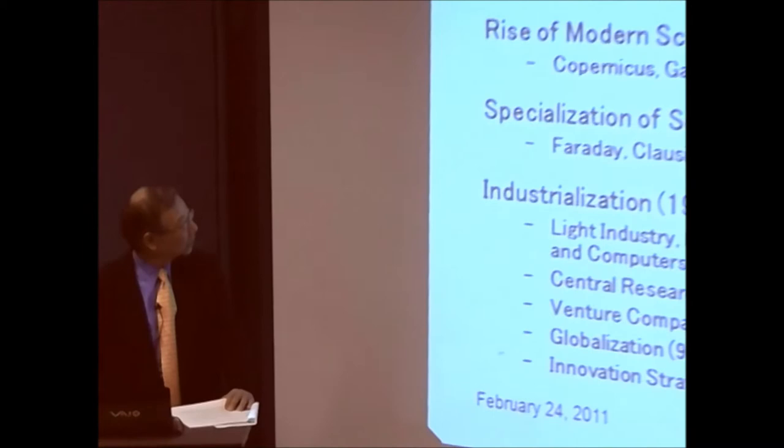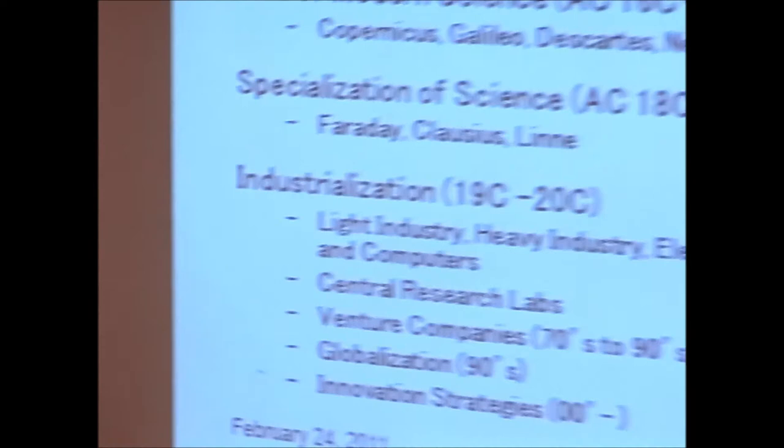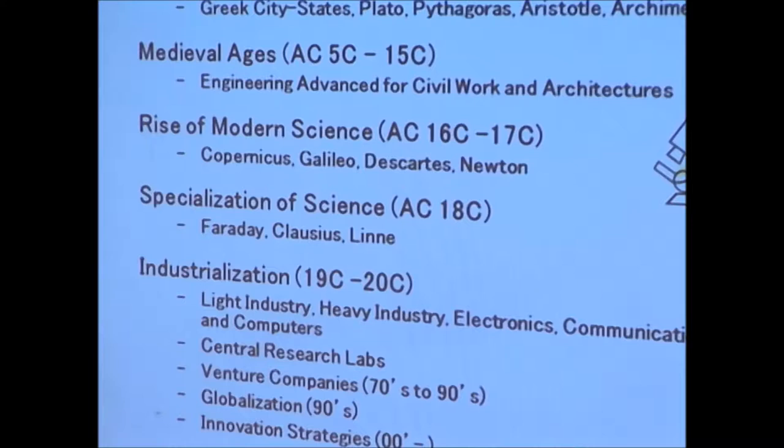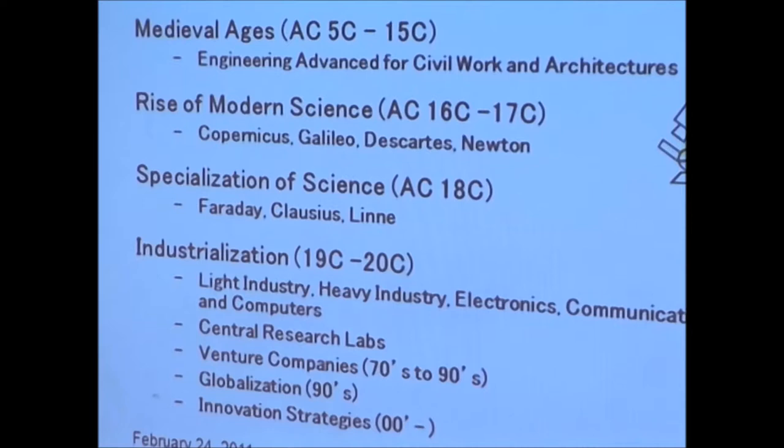Then the center moved to Rome, where advances in engineering were achieved, such as civil work, waterworks, and architecture. It was in the 16th and 17th century that science and technology finally converged. The representative examples of this age are Copernicus and Galileo's physics and astronomy, and Newton's physics and mathematics. The 17th century saw the establishment of the methodology of modern science based on Descartes' reductionism.